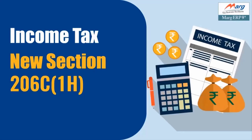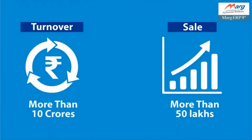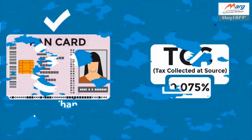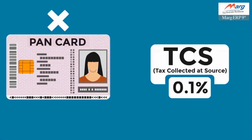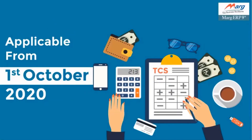The government has added a new subsection 1H under Section 206C in Income Tax, which means that if you are selling goods within India, you need to collect TCS from your buyer. If the turnover of the seller is greater than Rs 10 crore from the previous financial year and sells goods exceeding Rs 50 lakhs, and if the buyer has provided their PAN card, then the seller will collect 0.075% TCS on the bill amount. If the buyer has not provided a PAN card, then the seller will collect 0.1% TCS. This amendment is applicable from 1st October 2020.